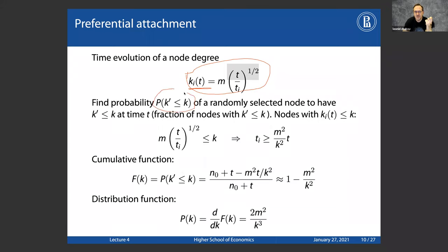The cumulative distribution function does not depend on time — the distribution remains the same throughout time. It depends on k and on m. Differentiating gives the probability distribution function: p(k) = 2m² / k³. The m is a constant parameter of the model. The key result is that probability is proportional to 1/k³ — a power law with exponent γ = 3. This very simple model instantly derives the degree distribution we observe in real-world networks, which is why it became so popular.